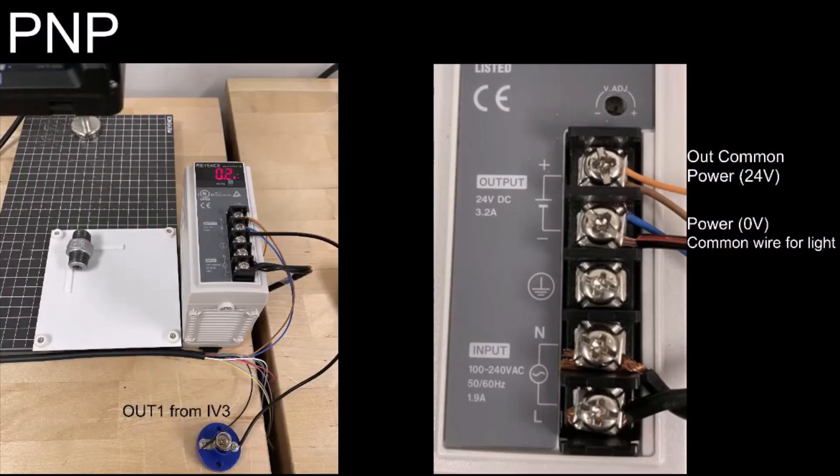In this example, I'm going to start with a PNP setup. On the left-hand picture, you can see my black output 1 wire is going to a light. On the picture on the right, you can see that I have my brown wire for 24 volts and my output common connected to my 24-volt terminal of the power supply. Right below that, in Terminal 2, you can see I have my blue wire and my common for the light connected to my 0-volt terminal of the power supply.